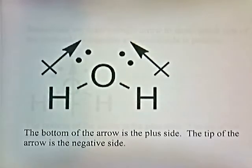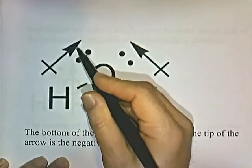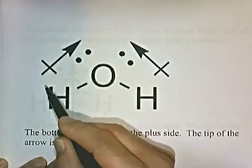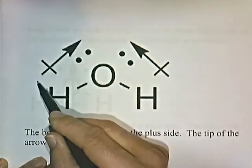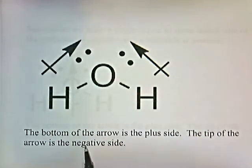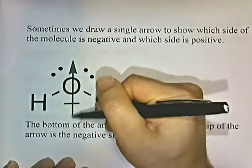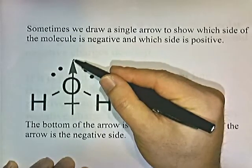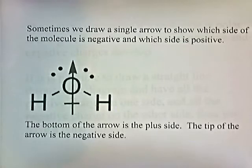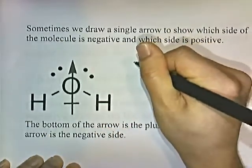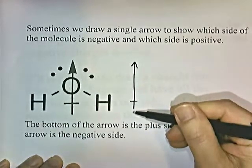Sometimes we use arrows to show the location of positive and negative charges on a molecule. The tip of the arrow indicates the negative side, and the tail — which has a plus sign — indicates the positive side. We can also draw a single arrow for the whole molecule showing which side is negative and which is positive: the tip of the arrow is the negative side and the bottom of the arrow is the positive side.